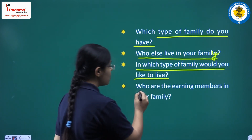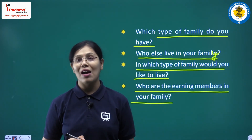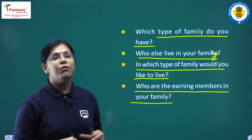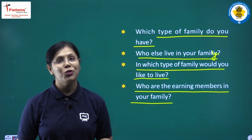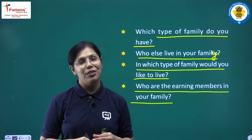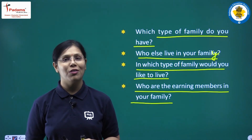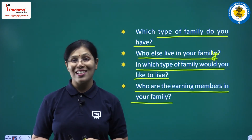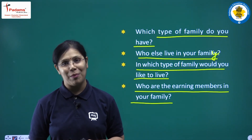The next question is: who are the earning members in your family? Every family has some earning members. For example, in the first picture we saw that both mother and father were earning members — both went to office, so both were working. Similarly, you have to find out and answer who the earning members in your own family are.